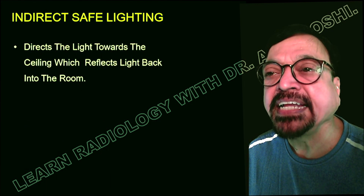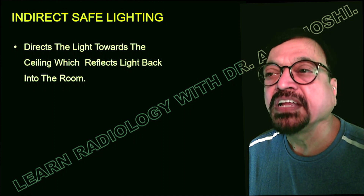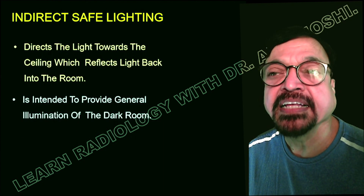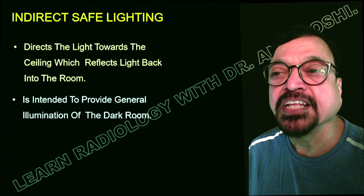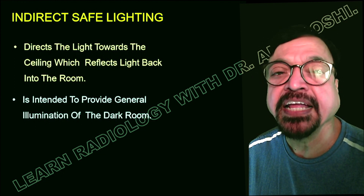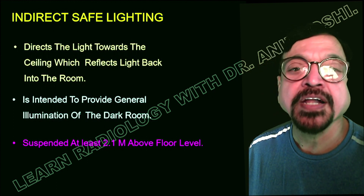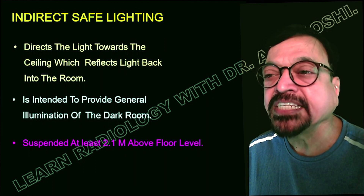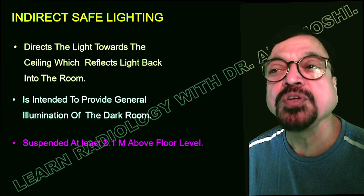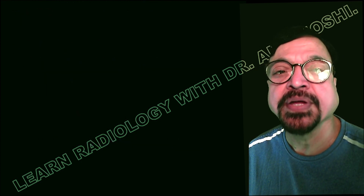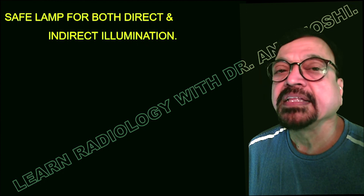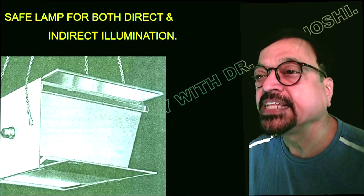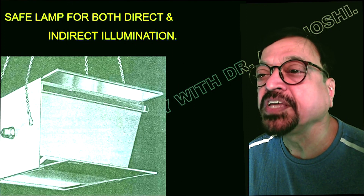The indirect safe light directs the light towards the ceiling, which reflects the light back into the room. Here, you are not receiving any direct light from the safe light. It should be installed to prevent general illumination of the dark room because it is facing the ceiling, and most of the time the colors in the dark room are very dark or usually black. It is suspended at least 2.1 meters above the floor level, fixed facing the ceiling so that you get reflected light and not direct light. So safe light can be used for direct as well as indirect illumination.